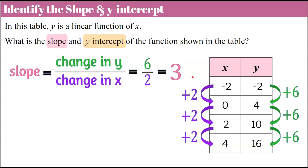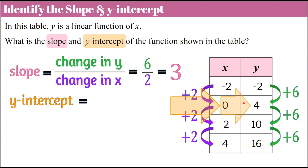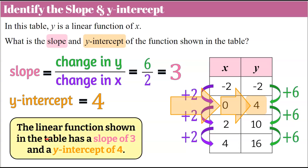6 divided by 2 is 3, so the slope of this linear function modeled in this table is 3. We were also asked to identify the Y-intercept. When looking at a table, we find the X value of 0 and identify its corresponding Y value, which is 4 here. If plotted as the ordered pair (0, 4) on a coordinate plane, it would lie on the Y-axis. So the line passes through the Y-axis at 4, making that the Y-intercept. This linear function has a slope of 3 and a Y-intercept of 4.